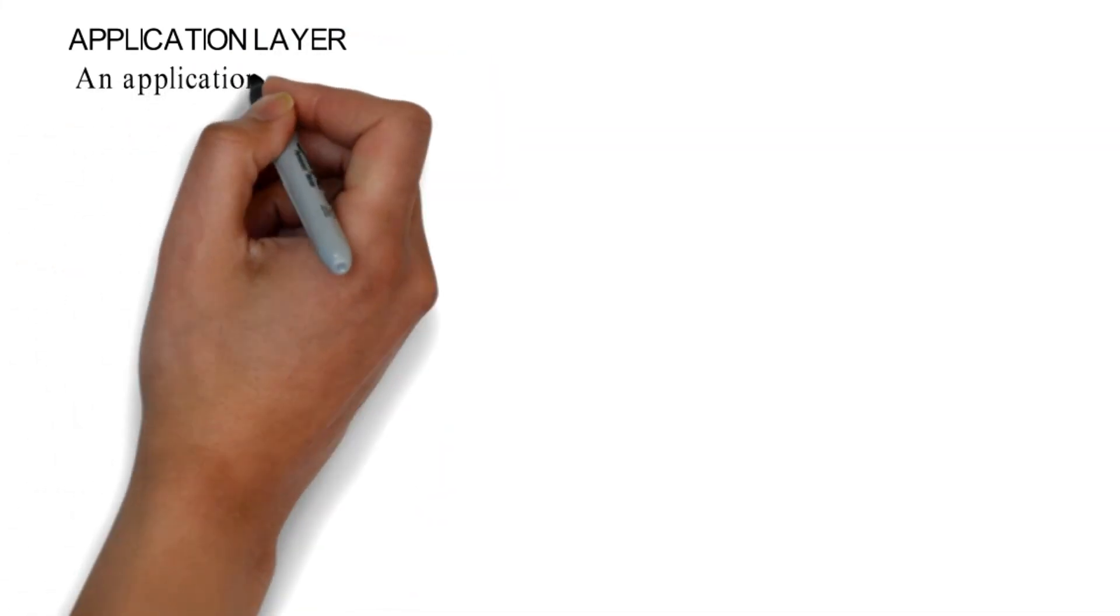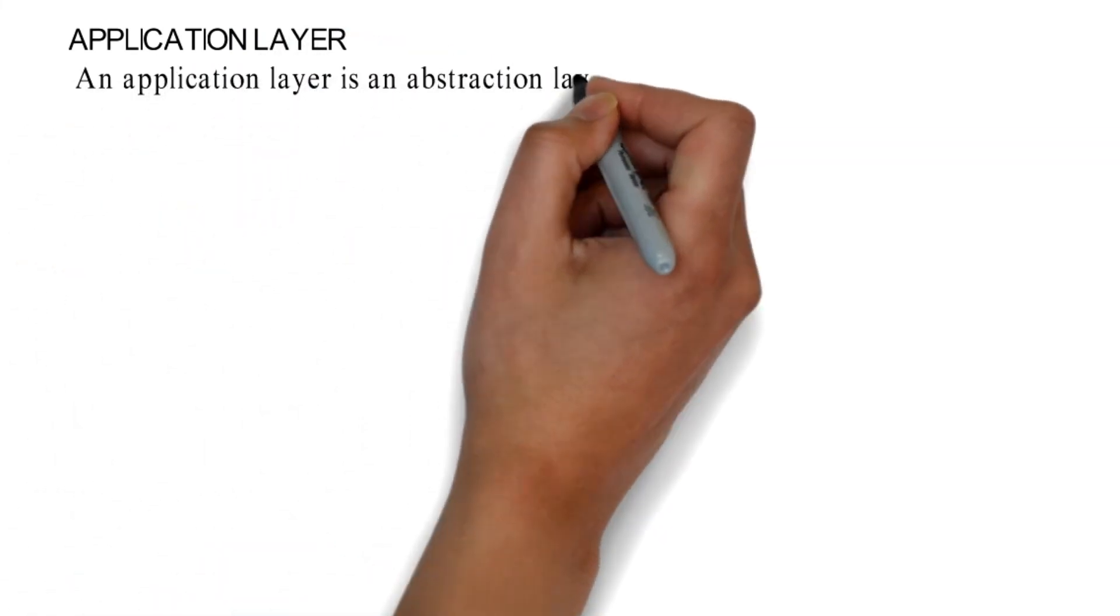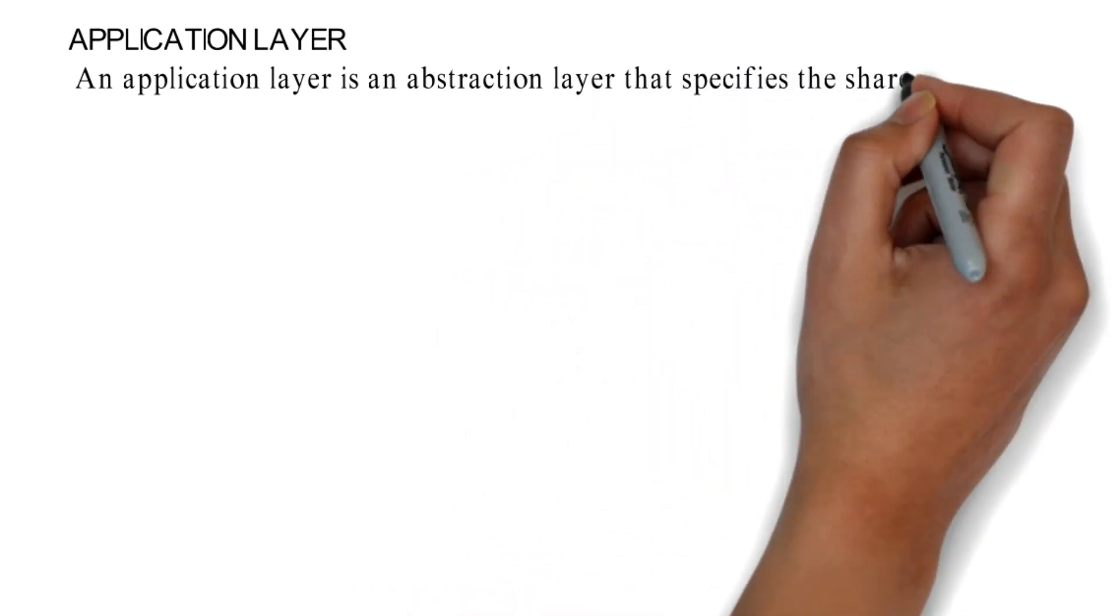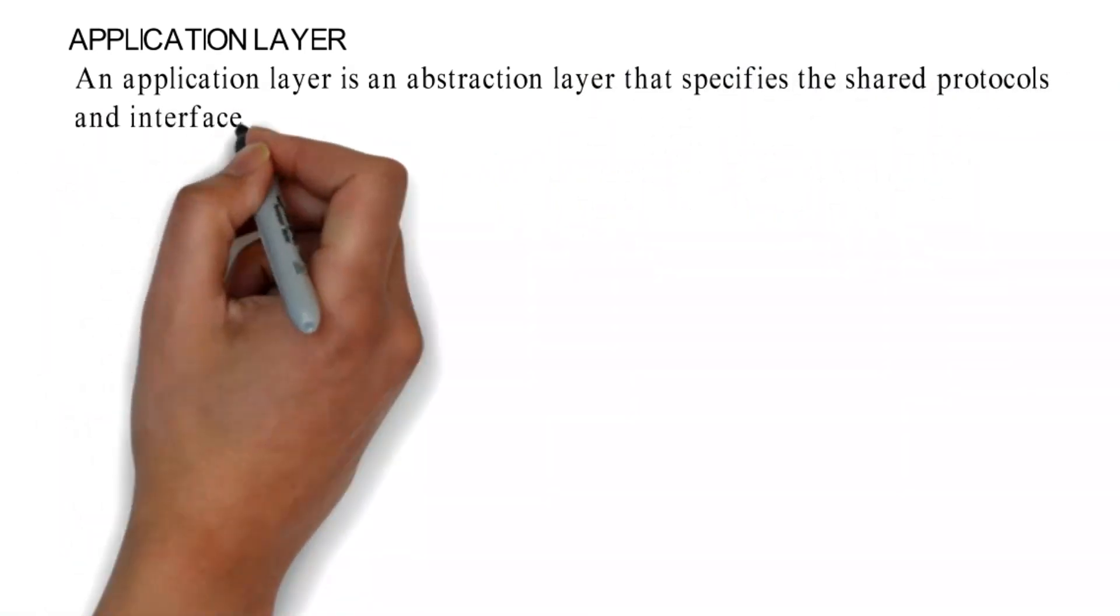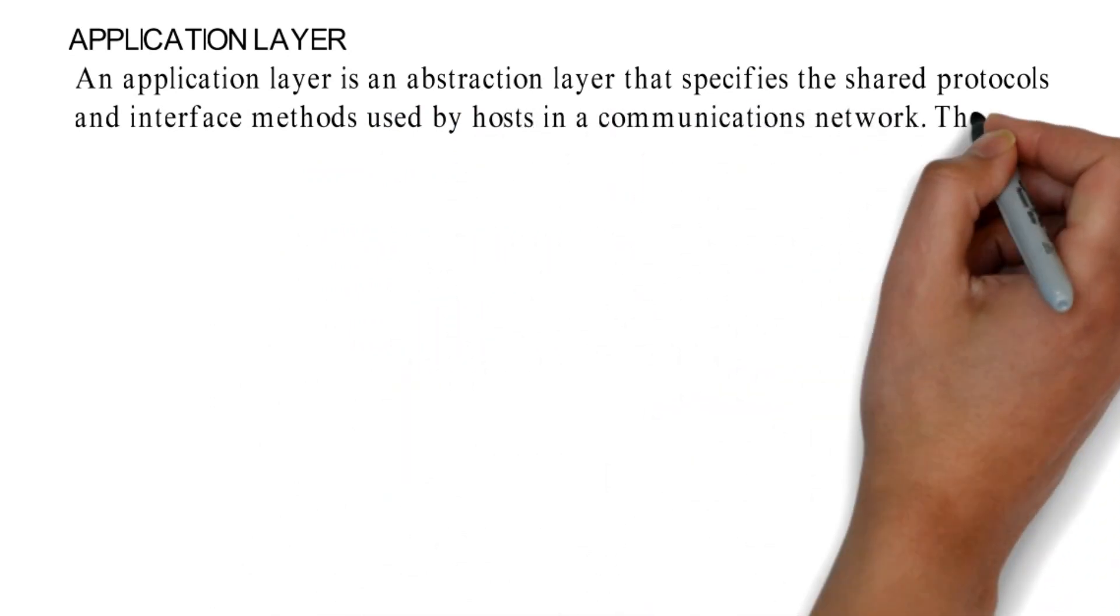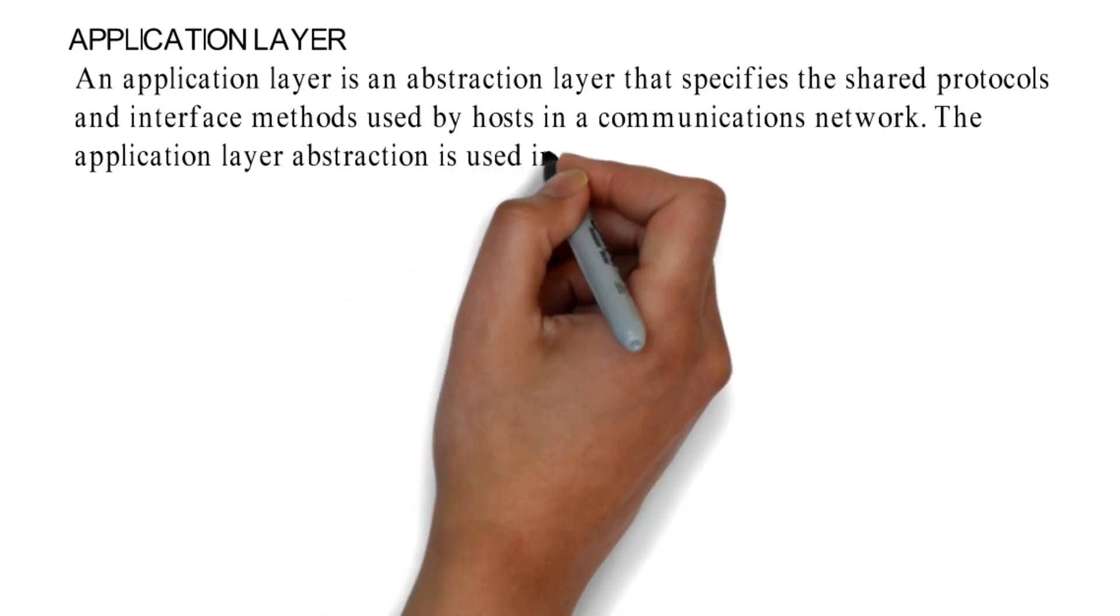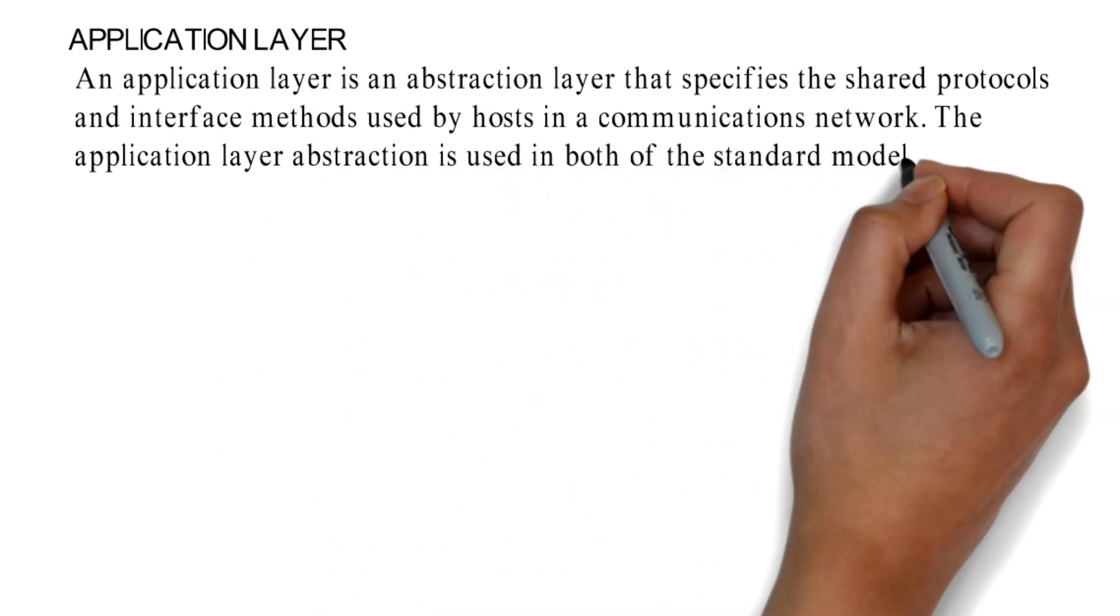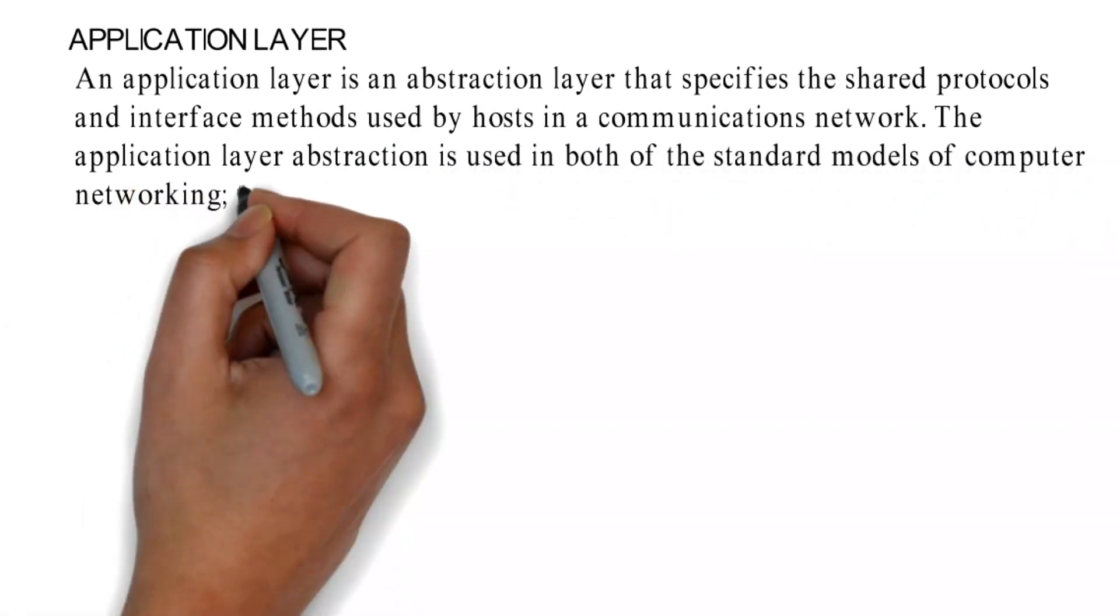Application Layer. An application layer is an abstraction layer that specifies the shared protocols and interface methods used by hosts in a communications network. The application layer abstraction is used in both of the standard models of computer networking.